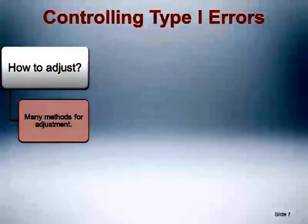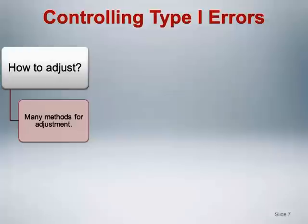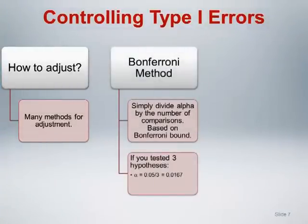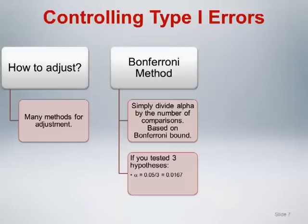So how does one control type 1 errors? There are a multitude of procedures for adjusting the significance level of hypothesis tests to preserve overall type 1 error rates. The most simple and direct approach is the Bonferroni method: simply divide the significance level by the number of comparisons conducted. For example, if you are planning to test three independent null hypotheses using a 0.05 level test, divide 0.05 by 3 and use the resulting significance level of 0.017 for each hypothesis test. This is a standard approach commonly seen in the literature because of the ease of implementation. However, use of the Bonferroni method becomes extremely conservative as the number of tests increases, meaning it becomes more difficult than it should be to reject any individual null hypothesis.